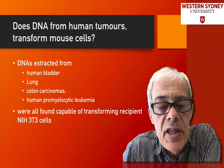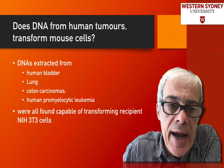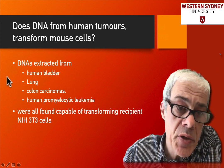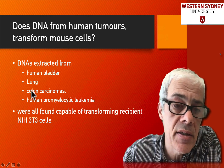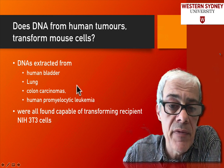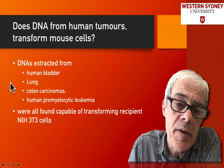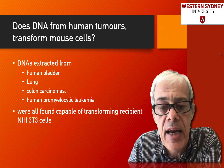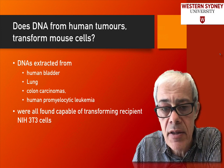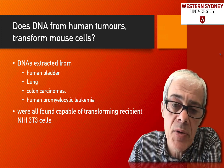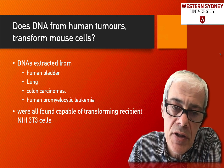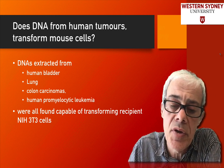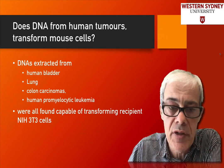Following on from those transfection experiments, another series of experiments was done in which they took DNA from human tissue samples — from human bladder cancers, lung cancers, colon carcinomas, and various leukaemias and different cancer types — and transformed that DNA into normal mouse fibroblasts. Again, DNA from the cancer cells was causing the normal mouse cells to form these foci. Using this technique of integrating DNA into the genome of mammalian cells, once that mutated DNA was expressed it was able to transform the cells.